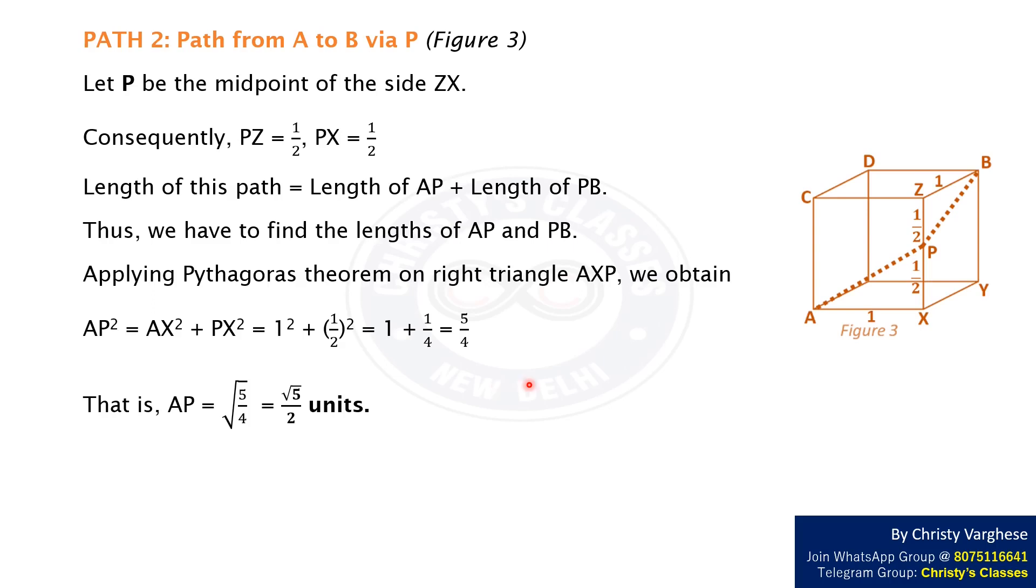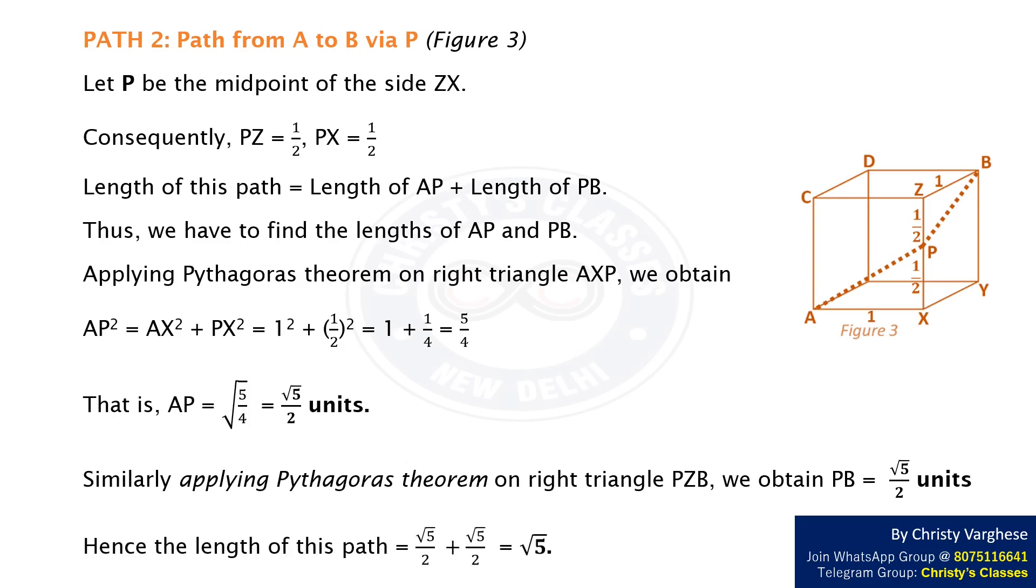Similarly applying Pythagoras theorem on right triangle PZB we obtain PB = √5/2 units. Hence the length of path APB equals √5/2 + √5/2, that is √5.